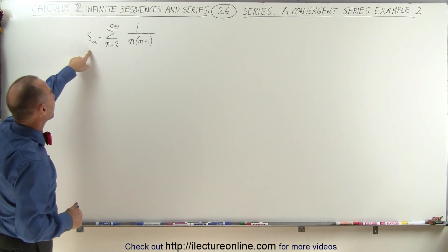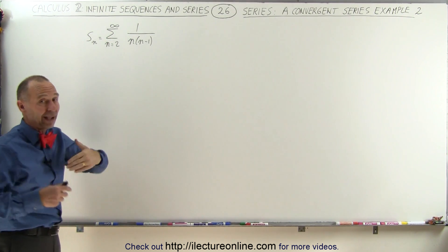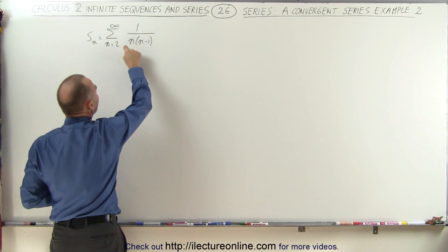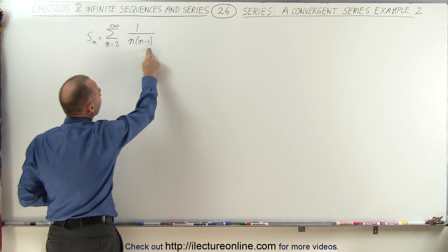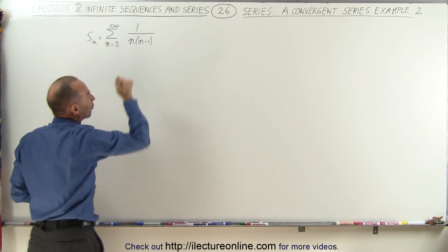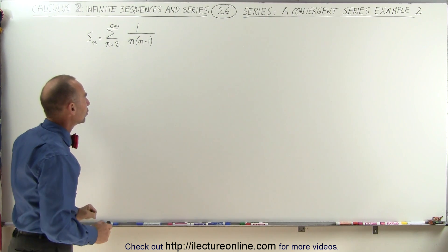In other words, when we sum up all the terms, what do we get? Here we have s sub n is equal to the infinite sum from n equals 2 to infinity. Here we have to start at 2 because it is 1 divided by n times n minus 1. If we let n equals 1, then n minus 1 becomes 0, and of course we have an undefined term, which we can't have. That's why we start with n equals 2.